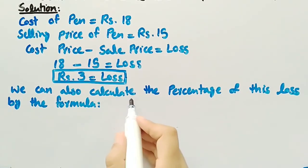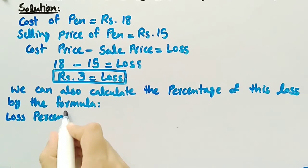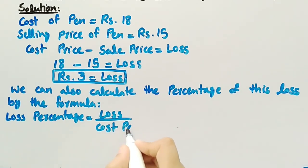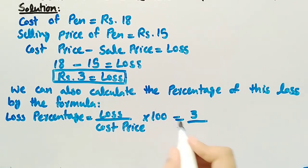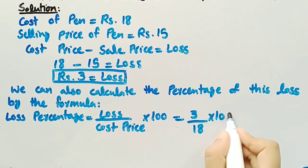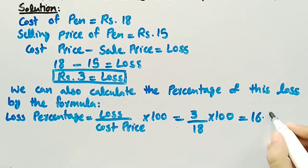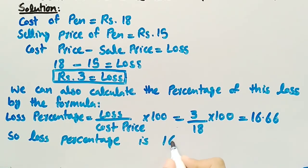We can also calculate the percentage of this loss using the formula: loss percentage equals loss divided by cost price, multiplied by 100. Putting in the values: loss is rupees 3 and cost price is rupees 18, multiplied by 100. This gives 16.66. So the loss percentage is 16.66%, meaning Sadie is at a loss of 16.66% of the cost price of the pen.